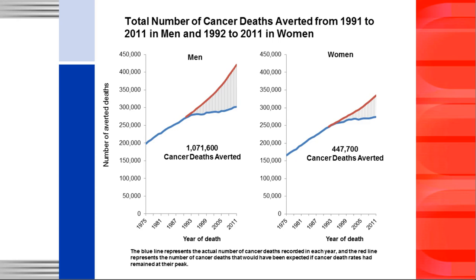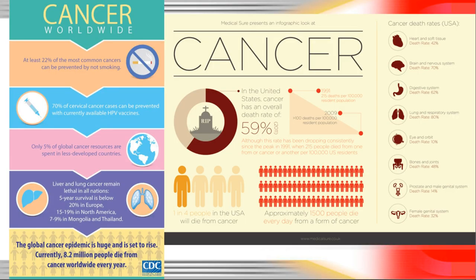There is lots of research being done on how to prevent and treat cancer, and over time we've actually seen millions of cancer deaths being avoided — in some cases because treatment is so much better, and in some cases because cases are avoided entirely. Cancer is a huge problem: at least one in five of the most common cancers globally can actually be prevented simply by behavior. But about 8 million people every year die from cancer.